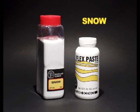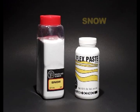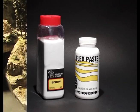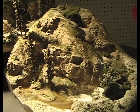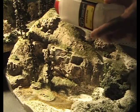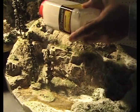Woodland Scenics Soft Flake Snow is another product in the Woodland Scenics landscaping system. Snow is easy to apply and gives a very realistic appearance to your layout. It is great for light dustings or can be applied to look like heavy drifts.